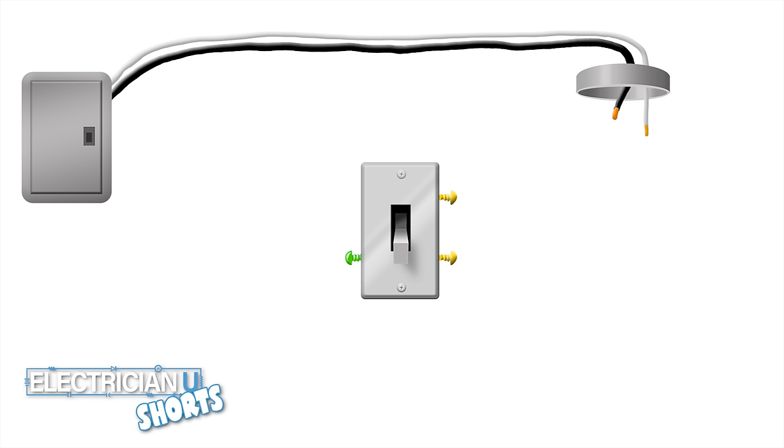For our hot, we're going to use the white conductor that's in the 12-2 that we're running down from this light box all the way down a wall to the switch. And we're going to use the black conductor to send back up.